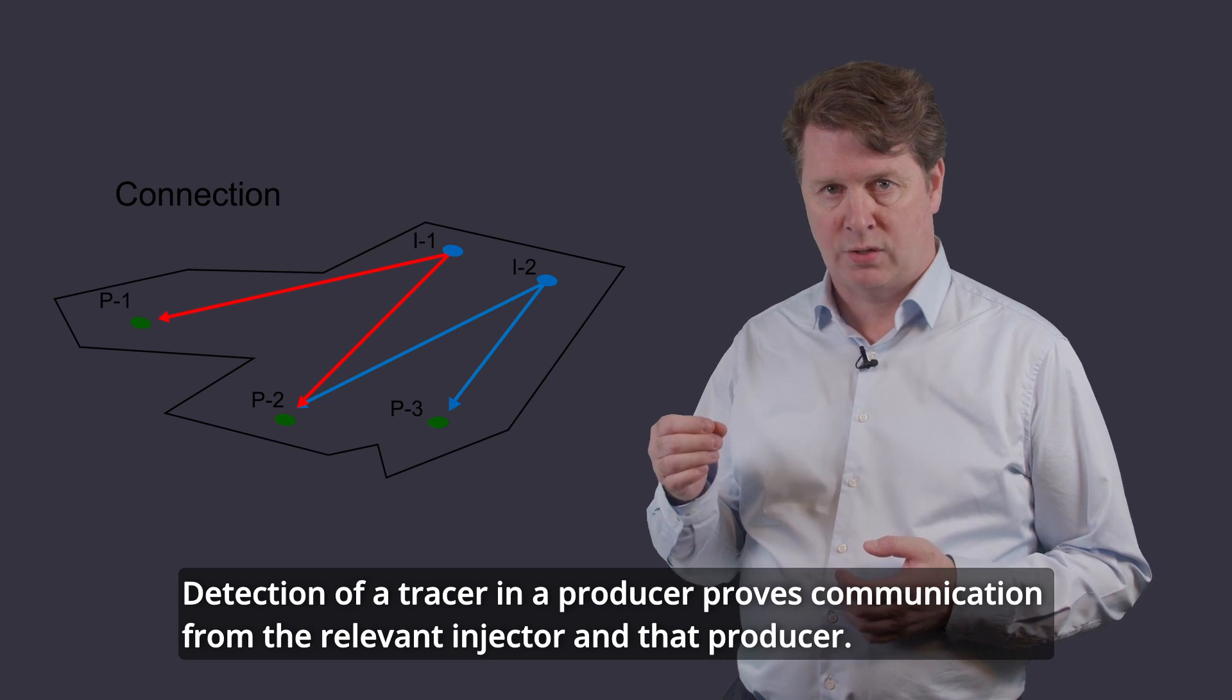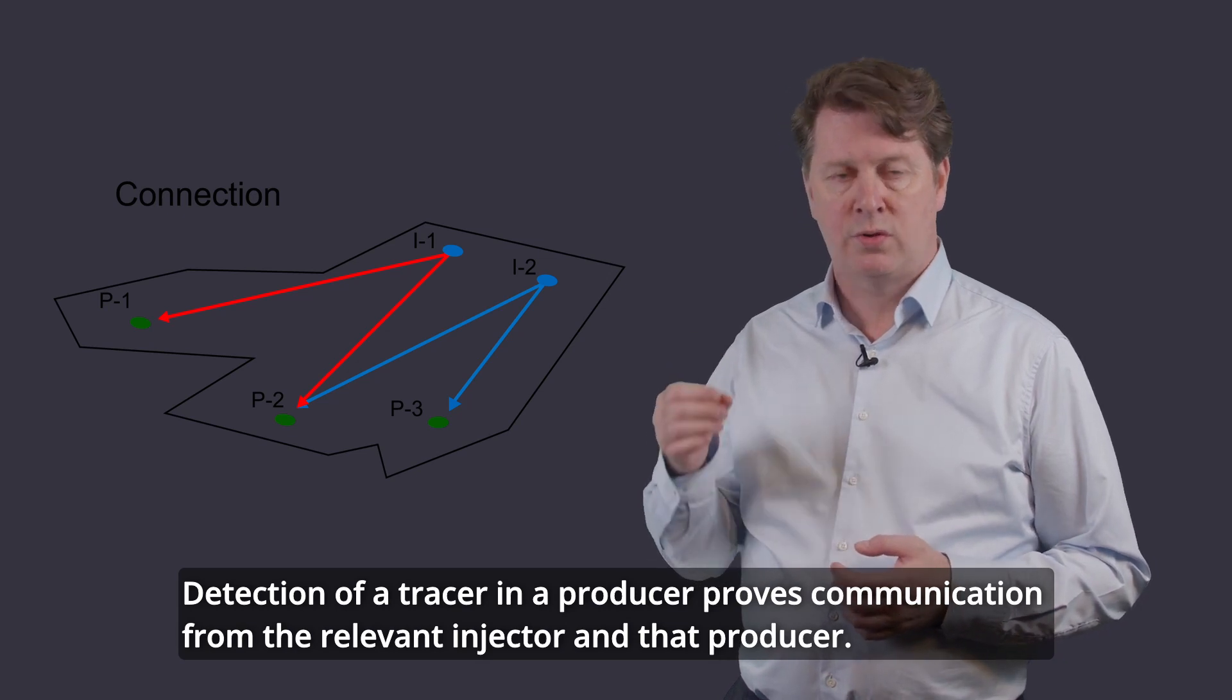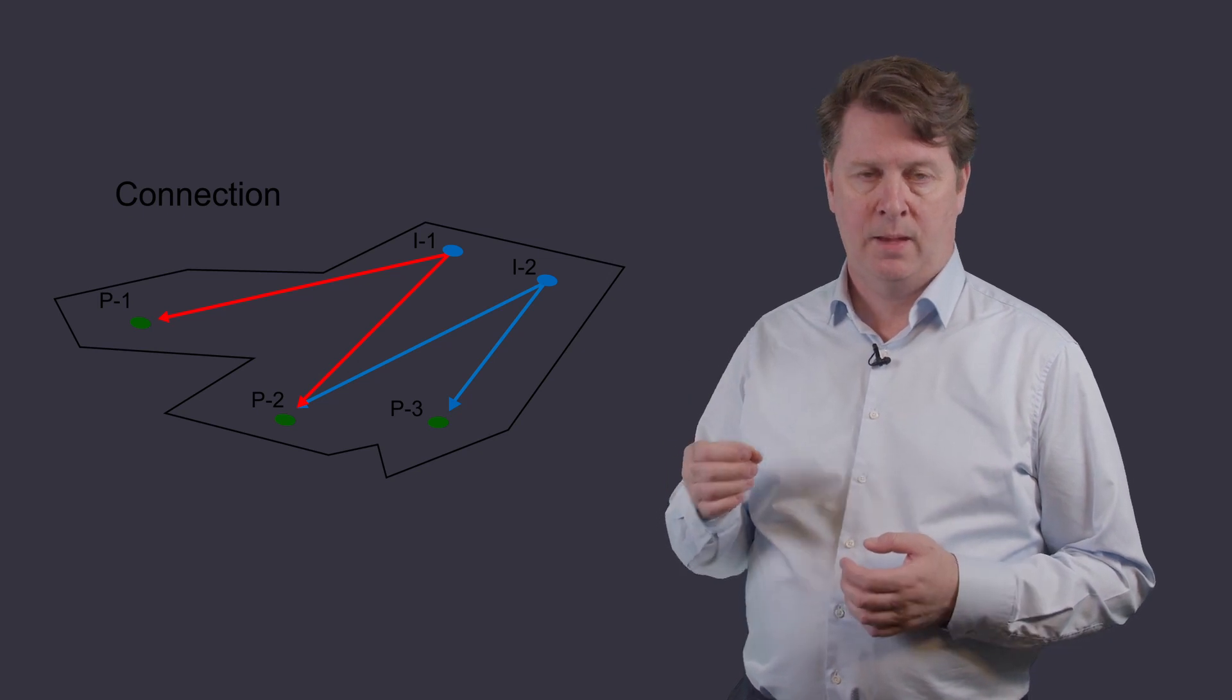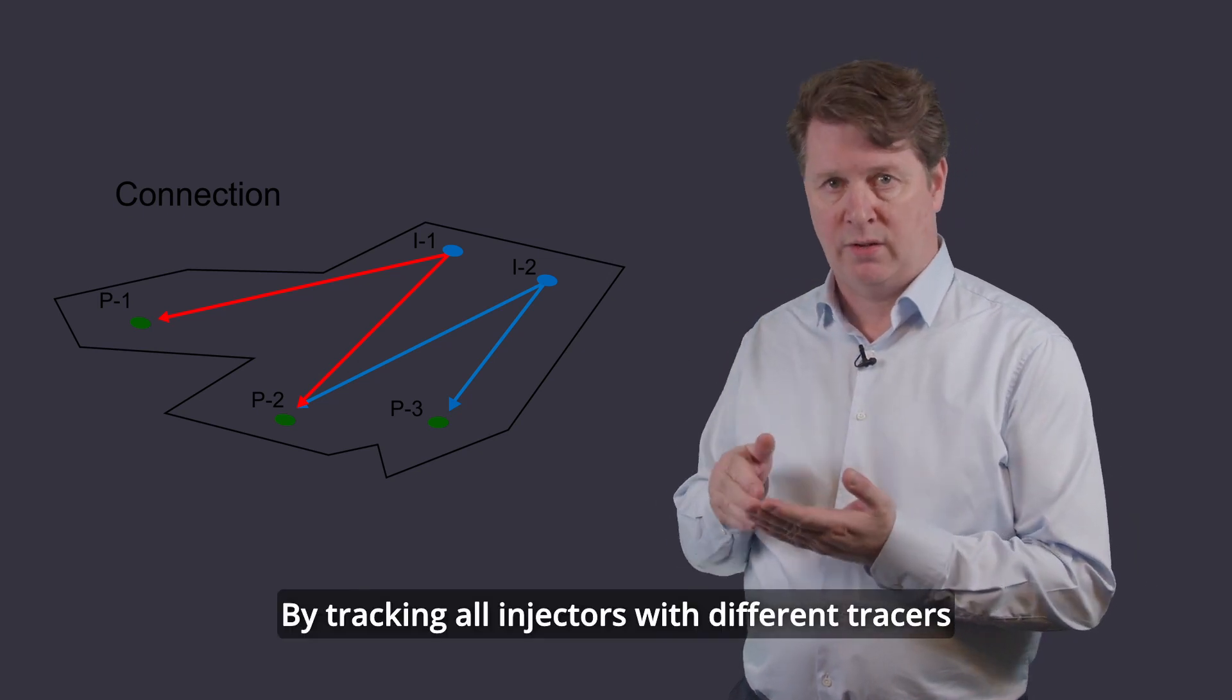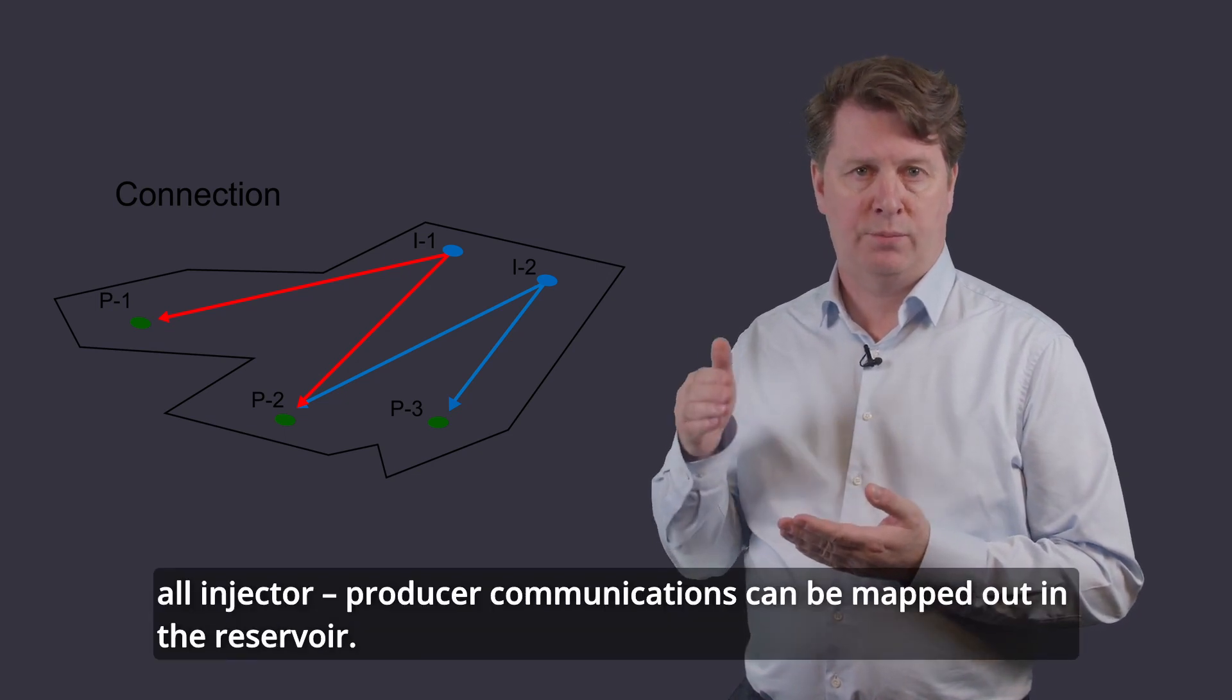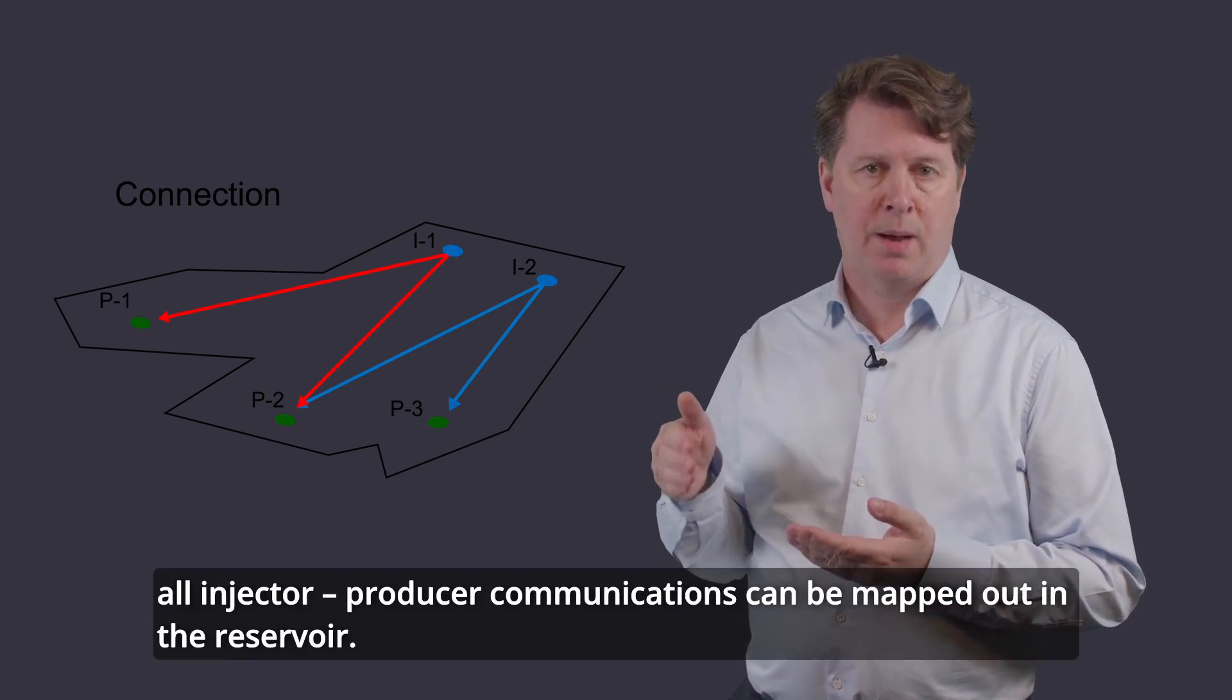Detection of a tracer in a producer proves communication from the relevant injector and that producer. By tracking all of the injectors with different tracers, all injector-producer communications can be mapped out in the reservoir.